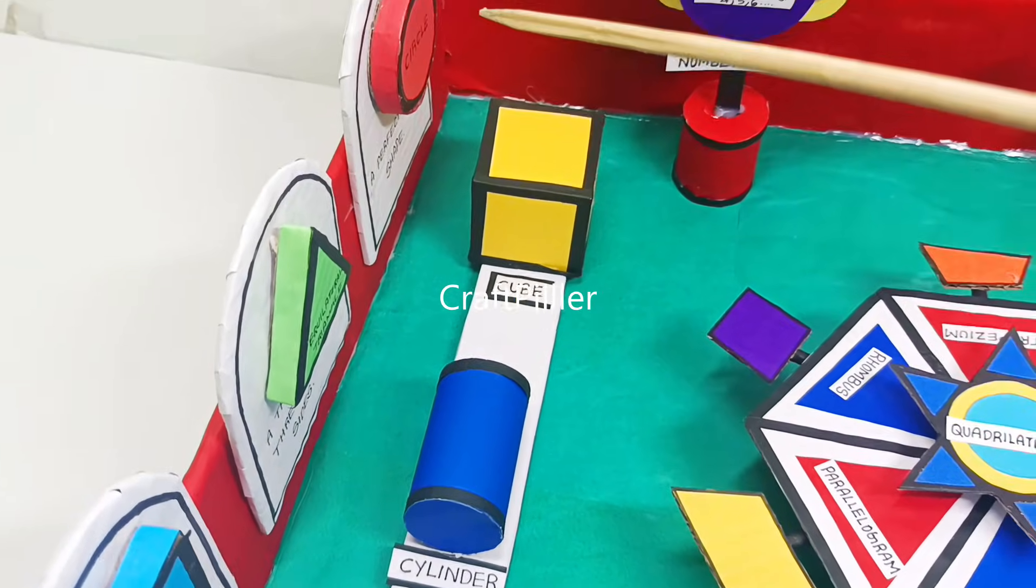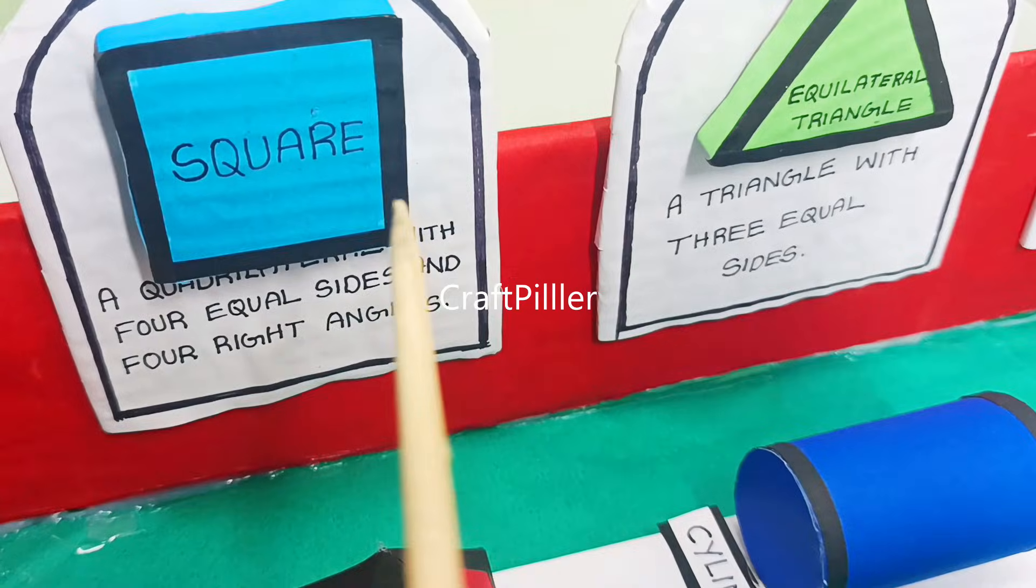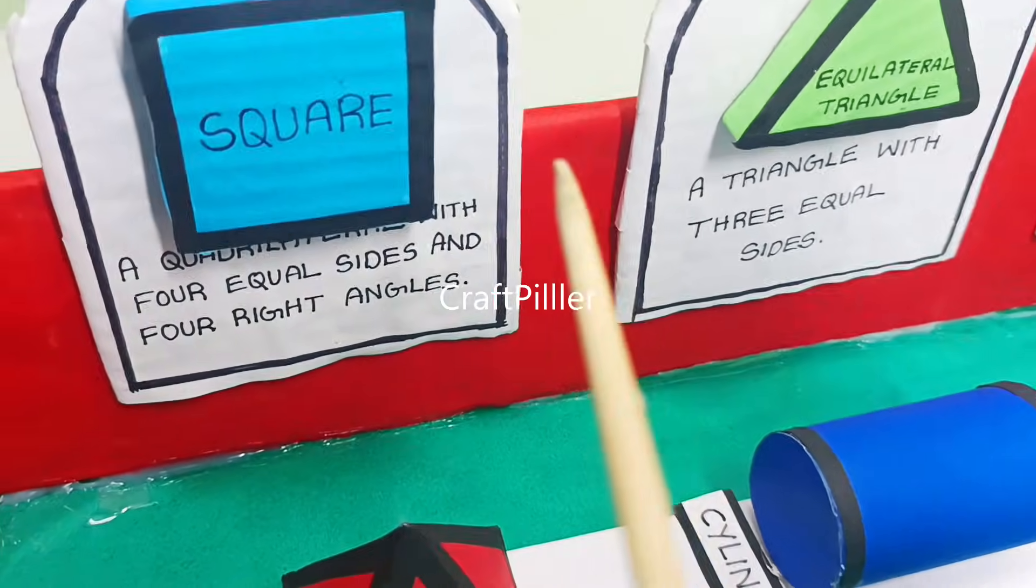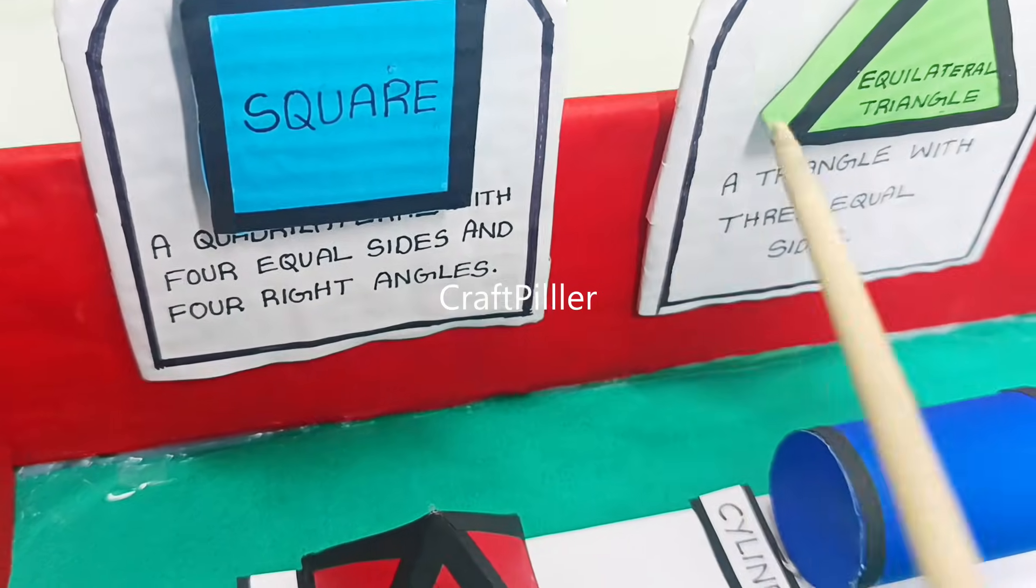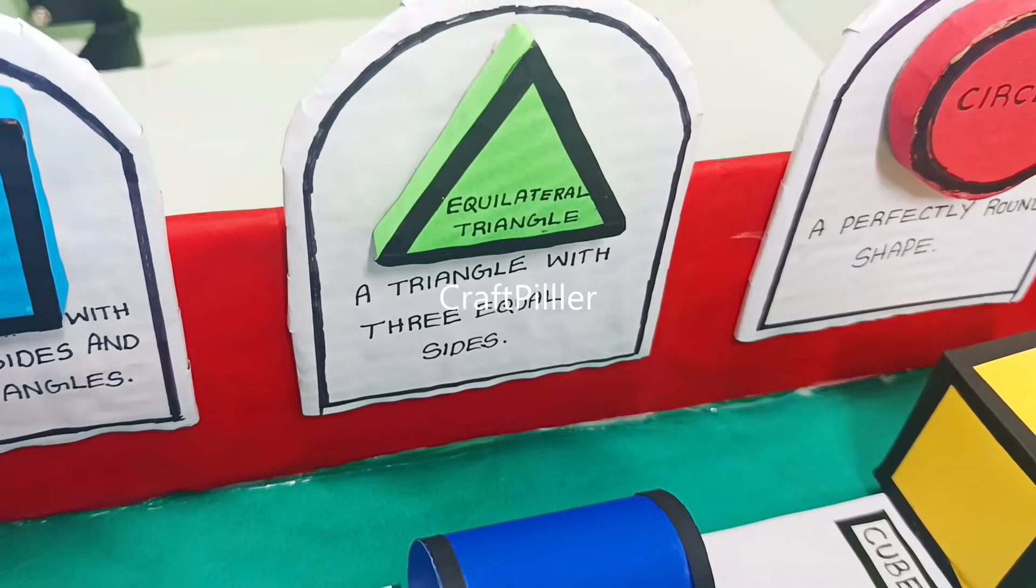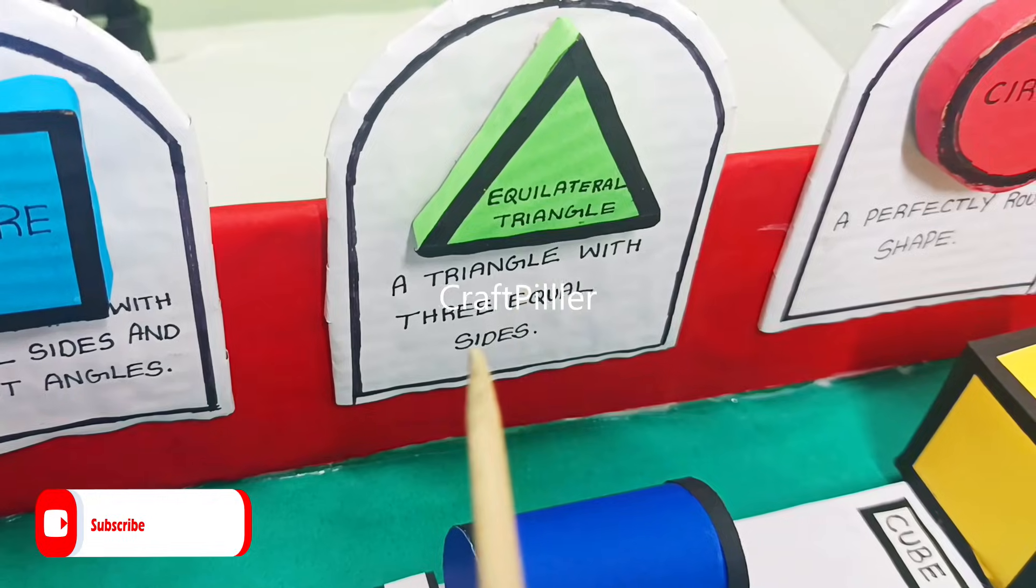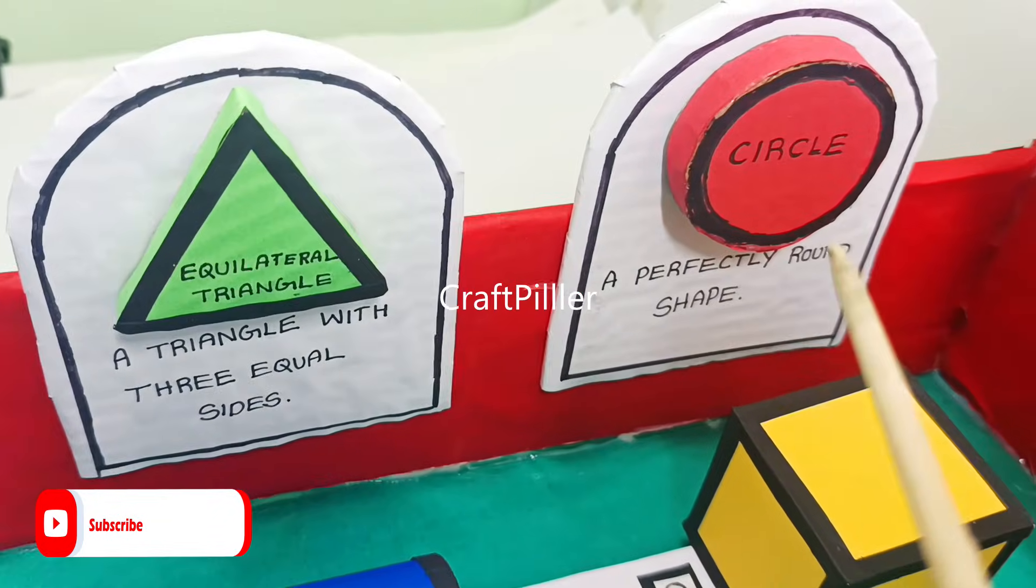We have showcased various 2D shapes in this math park. Let me explain one by one. This shape here is a square, which is a quadrilateral with four equal sides and four right angles. We have an equilateral triangle with three equal sides, and we have a circle which is perfectly round shaped.